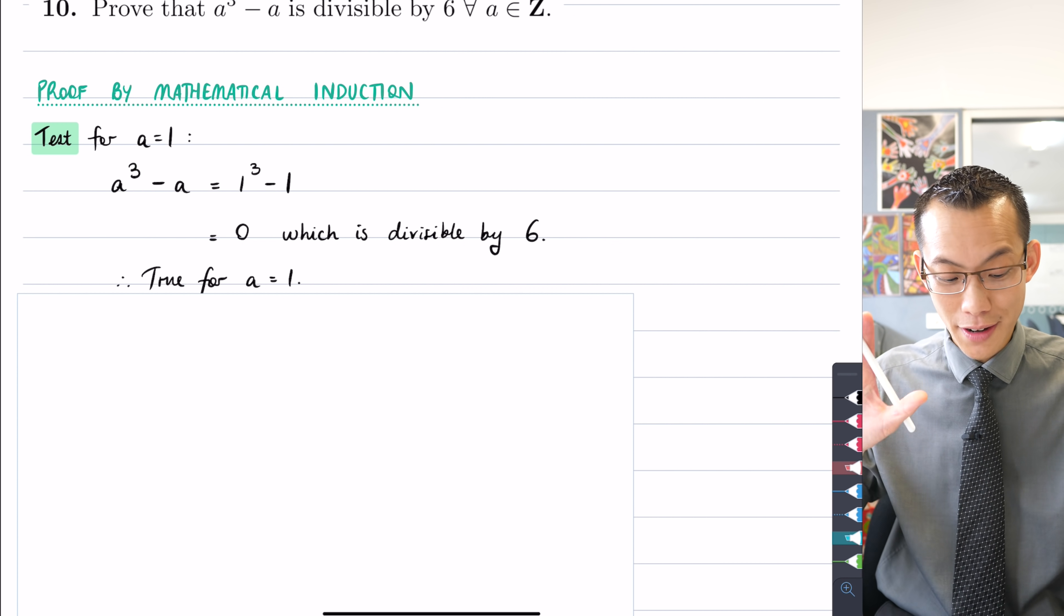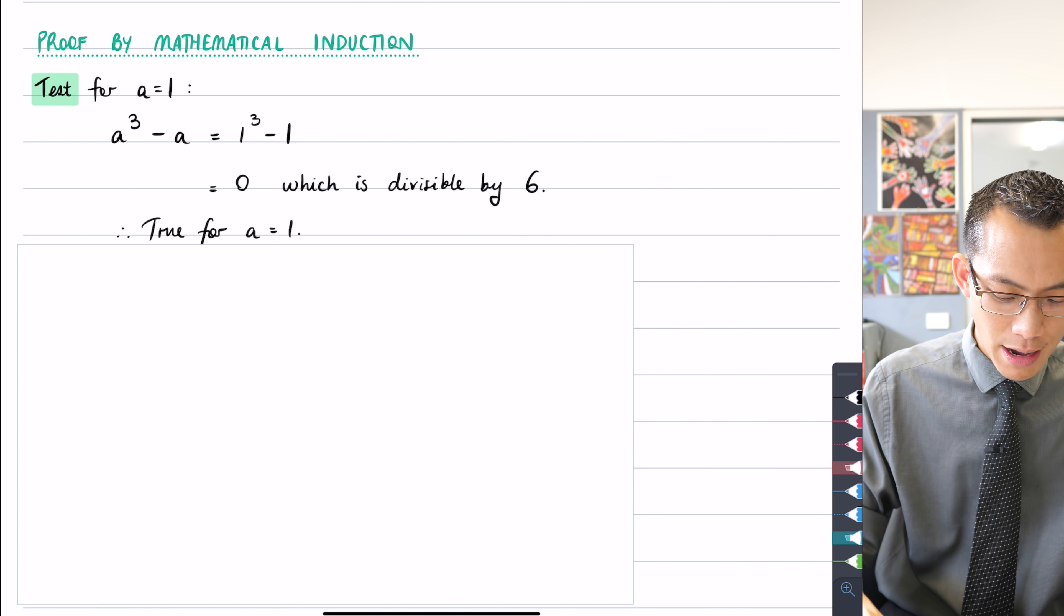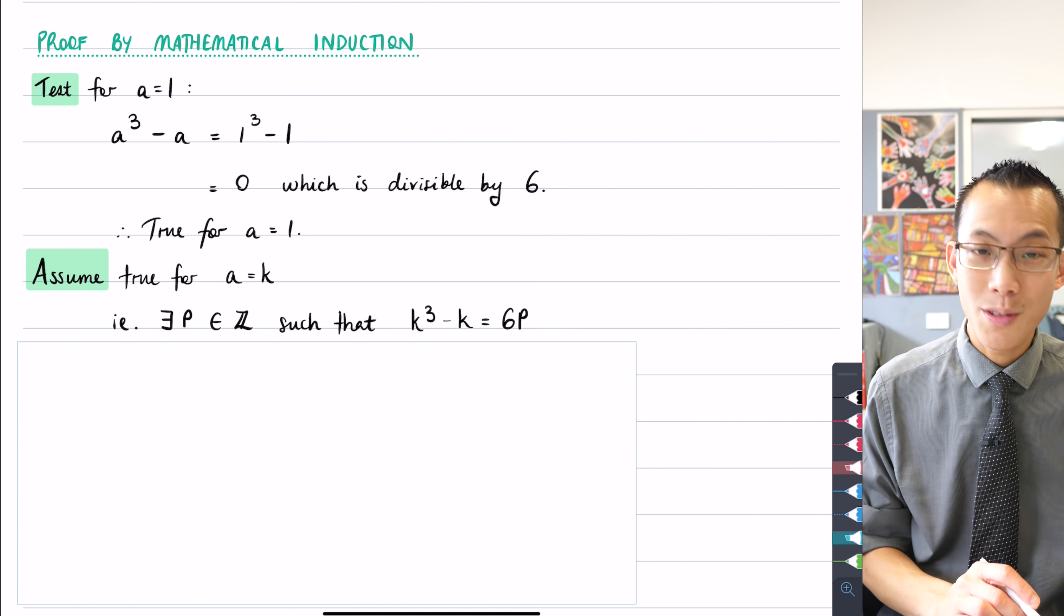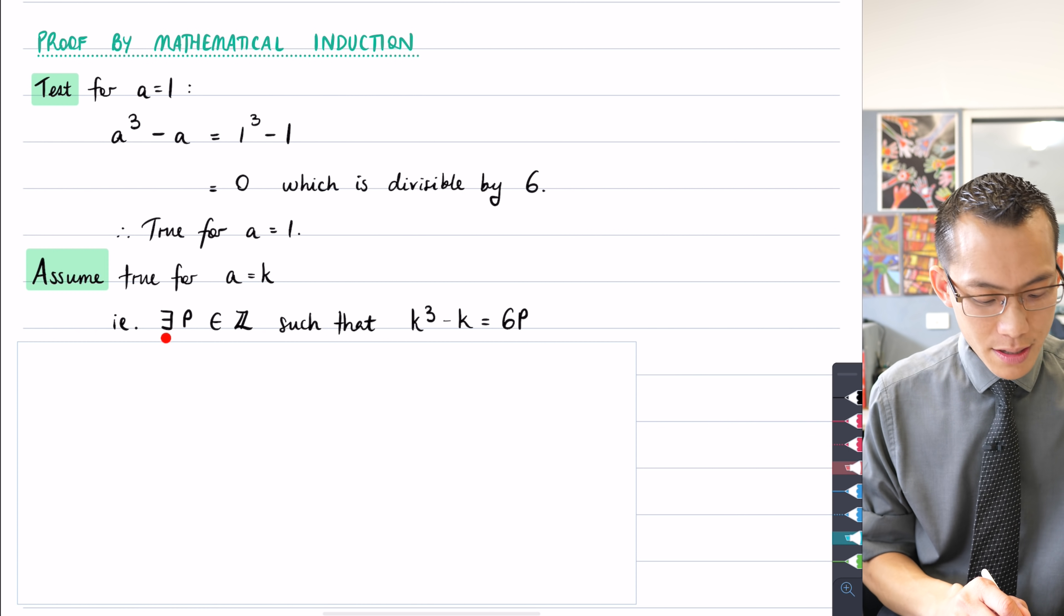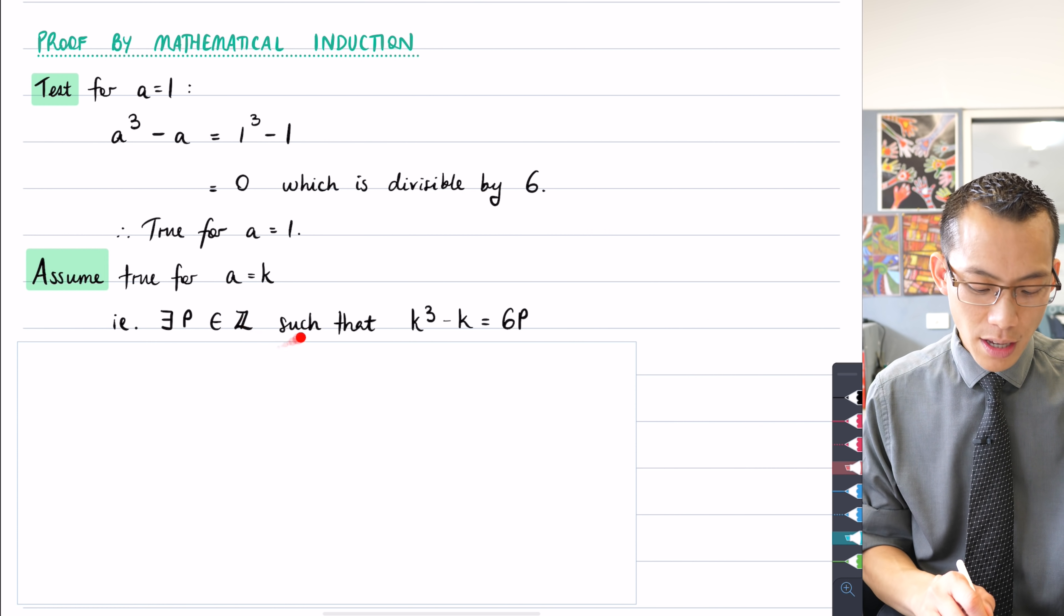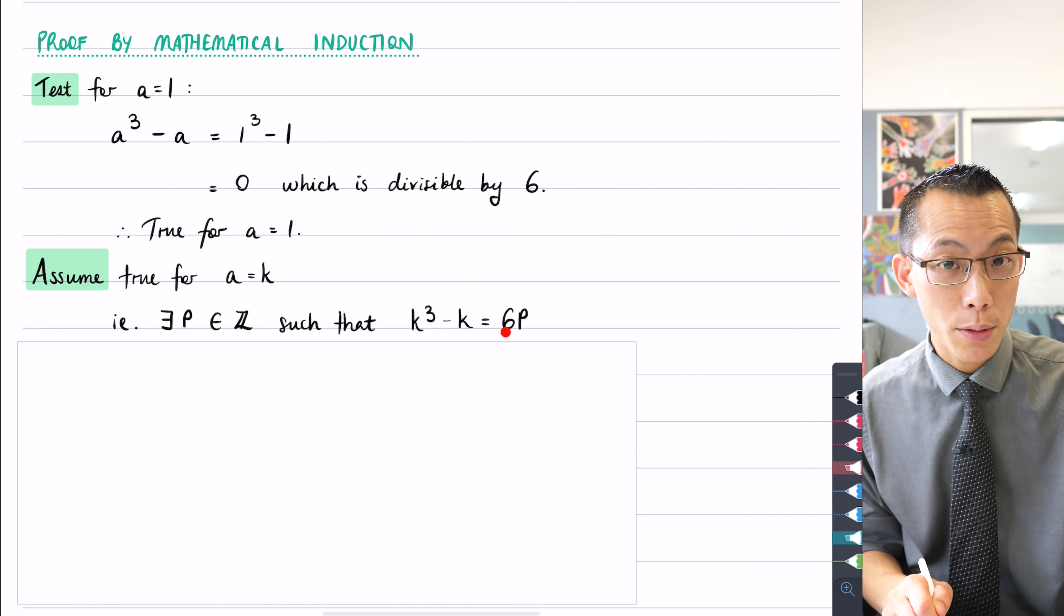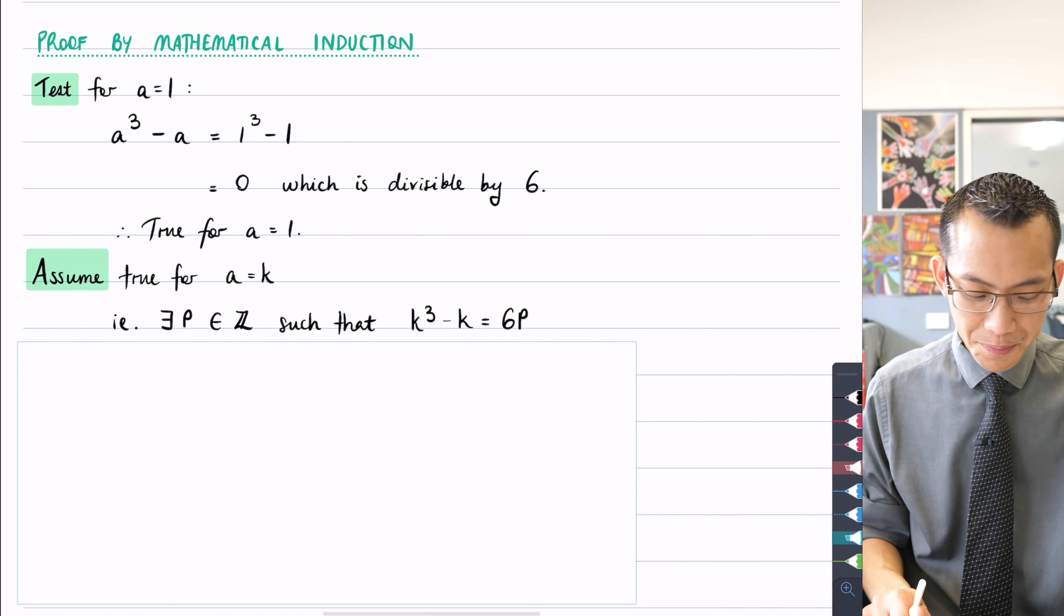So first snag sort of addressed, I haven't solved it but I know it's there. My second snag comes after I do the assumption step. You can see I'm just going to assume that this is true for some arbitrary value of a and what I can say is using some of the notation that we have learned recently in the nature of proof, there exists some value of p where p is one of the integers such that k³ - k is 6p. So what I'm saying here is k³ - k is going to be some multiple of 6, which is analogous to saying it's divisible by 6.